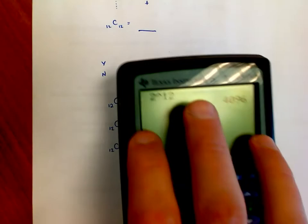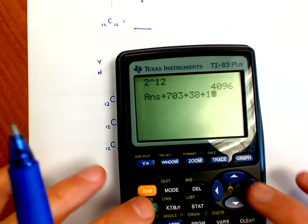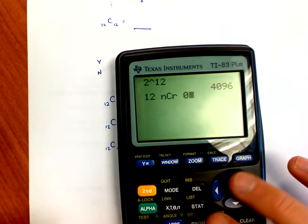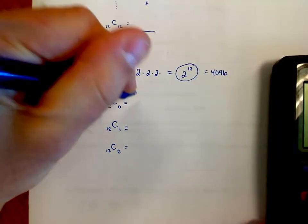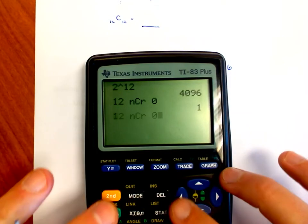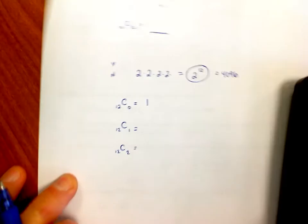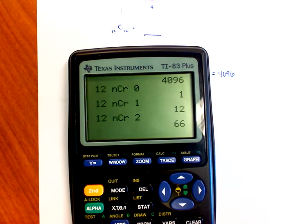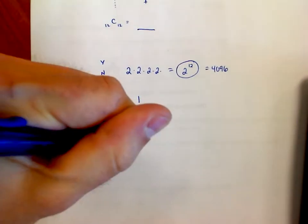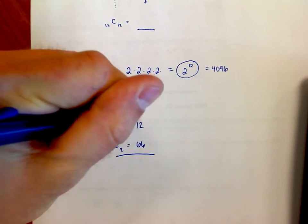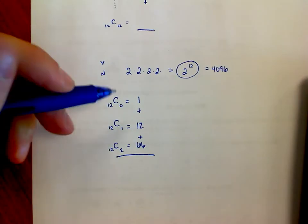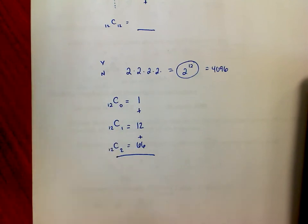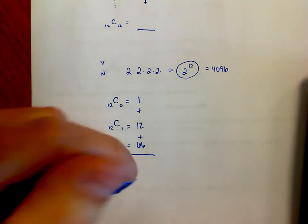So then I can go through and say, well, what's 12 ncr 0? That's 1. What is 12 ncr 1? That's 12. And what is 12 ncr 2? That's 66. And so now, because I'm adding together—I can go to zero or one or two—one plus 12 plus 66 is 79.